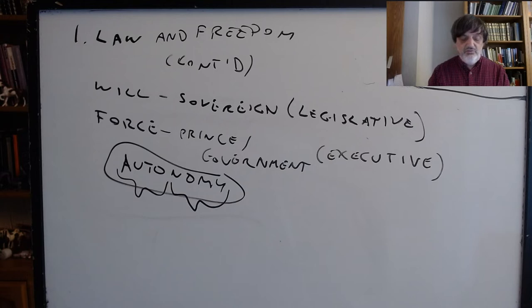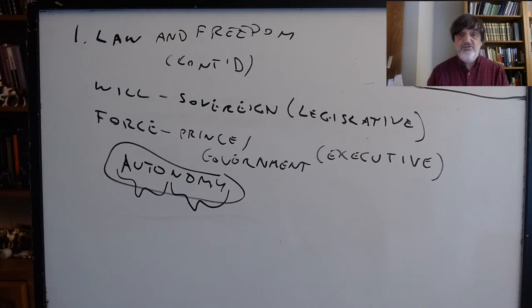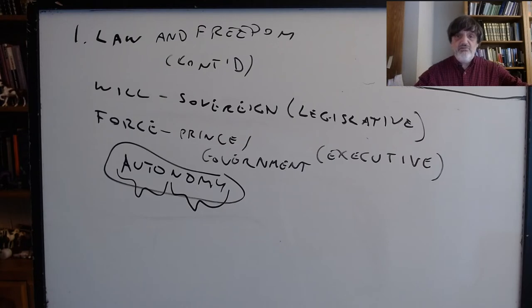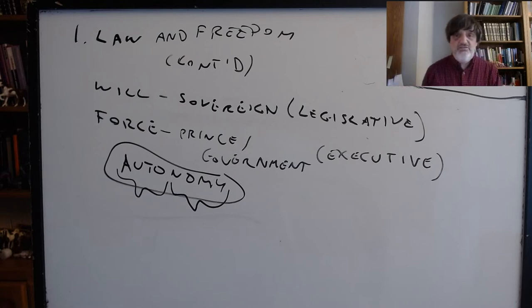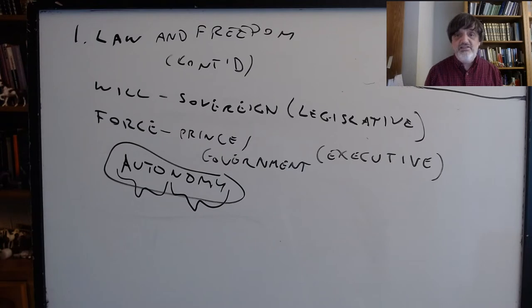It doesn't mean everyone else being restricted from interfering with you the way Locke understands it, because that's still not enough — you're still a slave to your wants. So how can you not be a slave to your own desires? The answer is if your will is giving a universal principle to which you then submit yourself, whether you desire this particular case or not. That's what true liberty consists in.